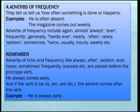However, if the verb is a form of 'be' — is, am, are — then the adverb comes after the verb. For example: 'He is always early' — here 'is' is the main verb, so 'always' is placed after it.